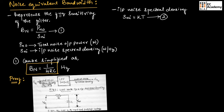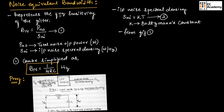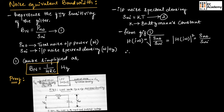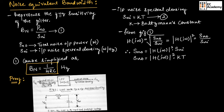The input noise spectral density is given as SNI is equal to K into T — let us call this equation number 2 — where K is Boltzmann's constant. From figure 1, we can write the transfer function H of j omega in terms of input and output as the square root of SN0 divided by SNI. Therefore, magnitude of H of j omega squared is equal to SN0 divided by SNI, so SN0 is equal to magnitude of H of j omega squared into KT. Let us call this equation number 3.